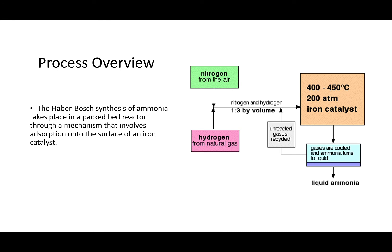The Haber-Bosch synthesis of ammonia takes place in a packed bed reactor through a mechanism that involves adsorption onto the surface of an iron catalyst, making it very hard to model. As you can see from the diagram, the input into the packed bed reactor is nitrogen and hydrogen in 3 to 1 ratio and it reacts at temperatures from 400 to 450 Celsius and from 100 to 200 atm using iron as a catalyst. After the packed bed reactor, the gases are cooled and ammonia turns into liquid.